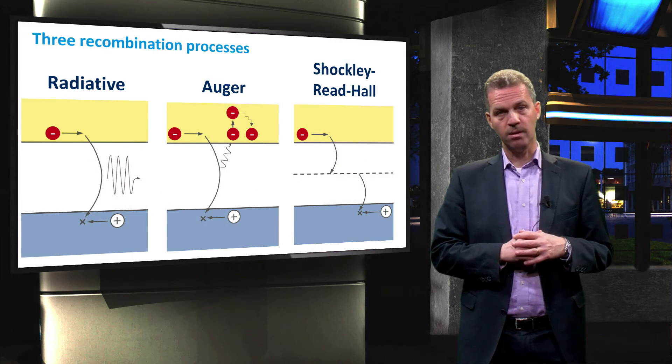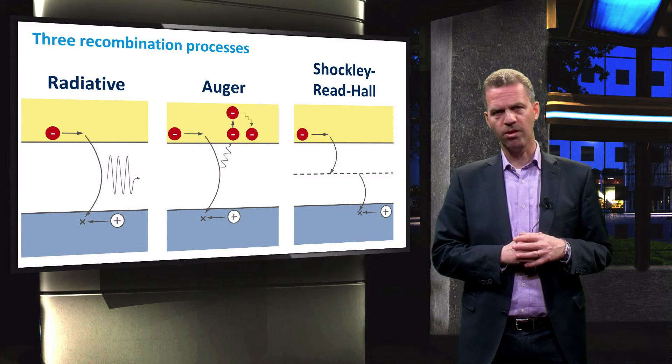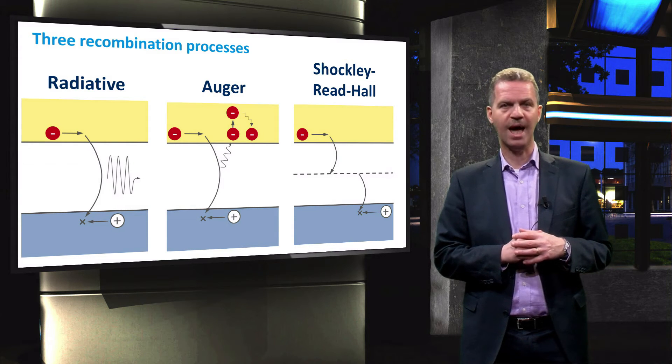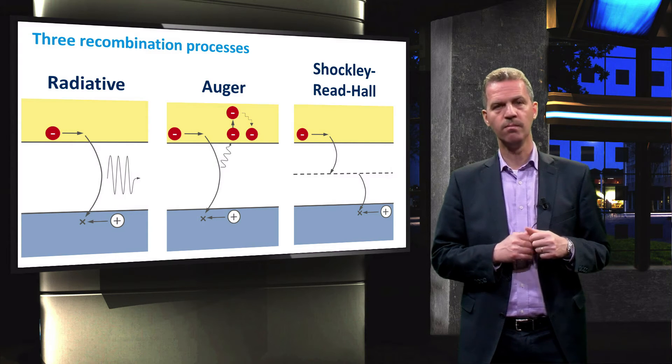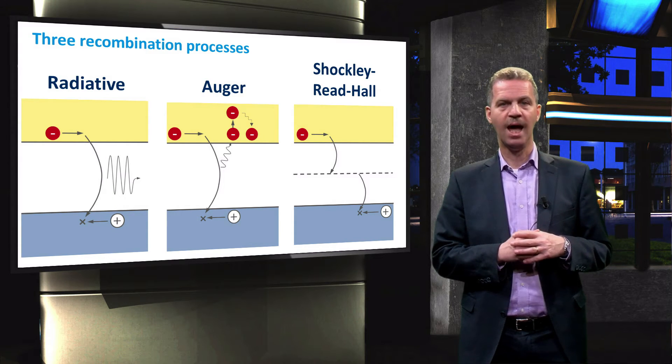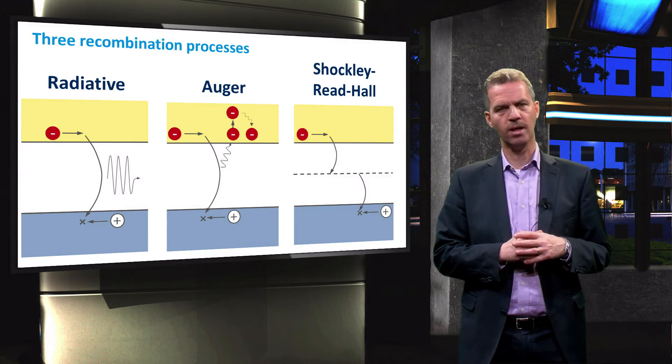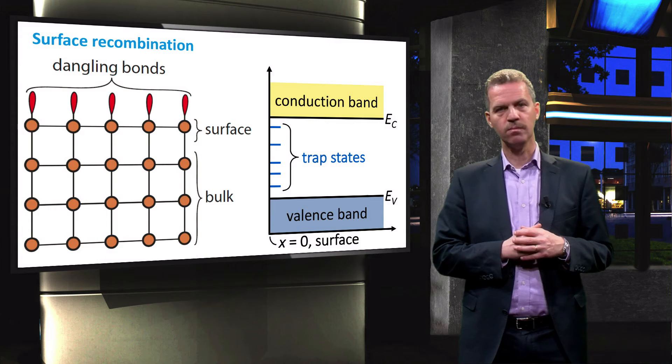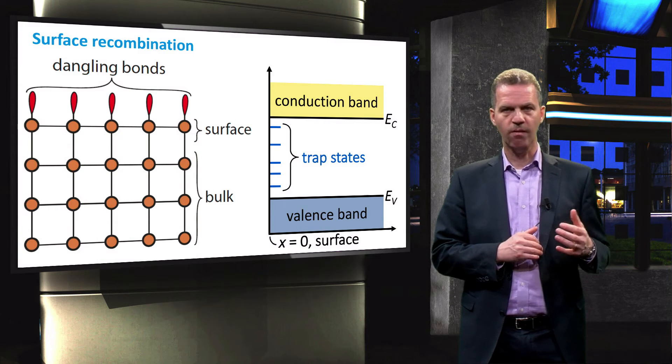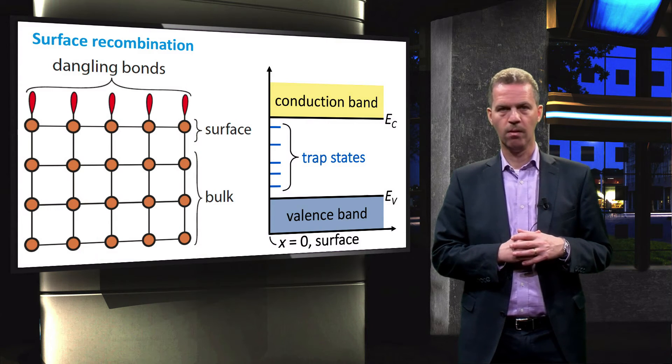We have seen before that the total lifetime depends on several recombination mechanisms acting at the same time: radiative recombination, Auger recombination, and Shockley-Read-Hall or SRH recombination. On top of these mechanisms, recombination at the surface adds another opportunity.